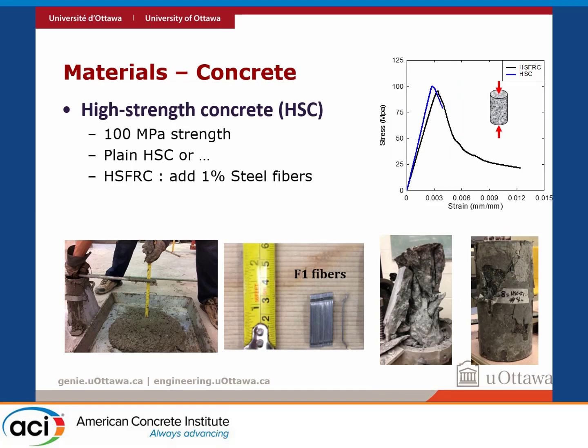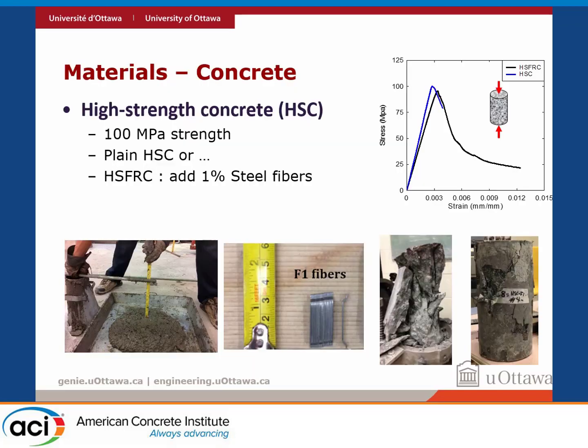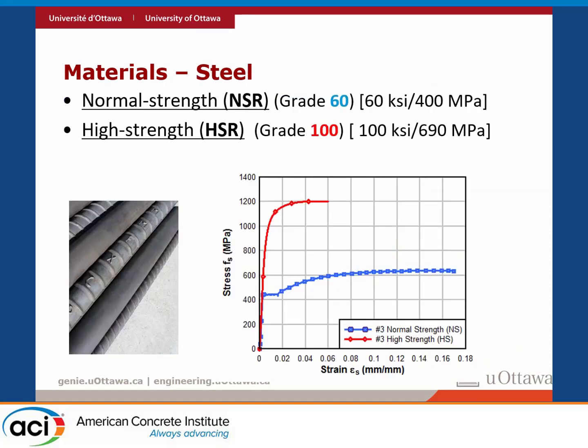In terms of materials: the high-strength concrete we used was 100 MPa strength. Looking at the compression curve in blue, you can see it doesn't have too much ductility. We also looked at HSFRC, which is exactly the same concrete mix with 1% hooked-end fibers added. You can see this improves the compressive toughness of the concrete. The other benefit is that you now get some tensile resistance as well — so both compression and tensile capacity of concrete are improved.